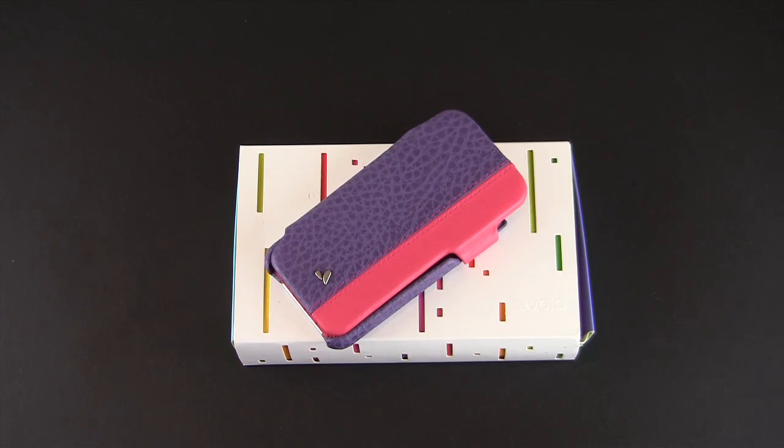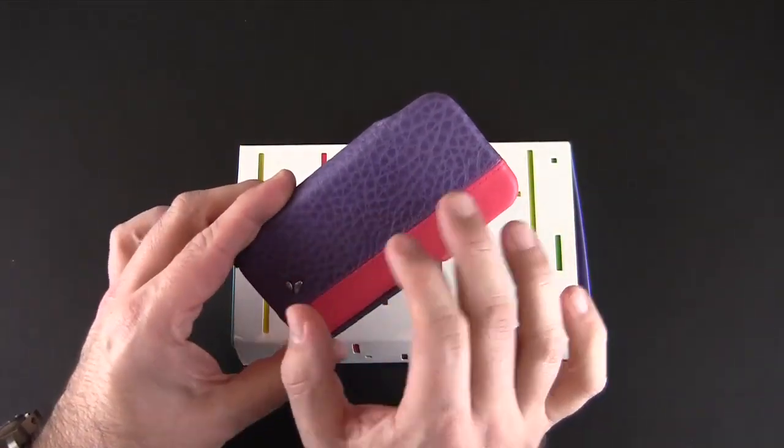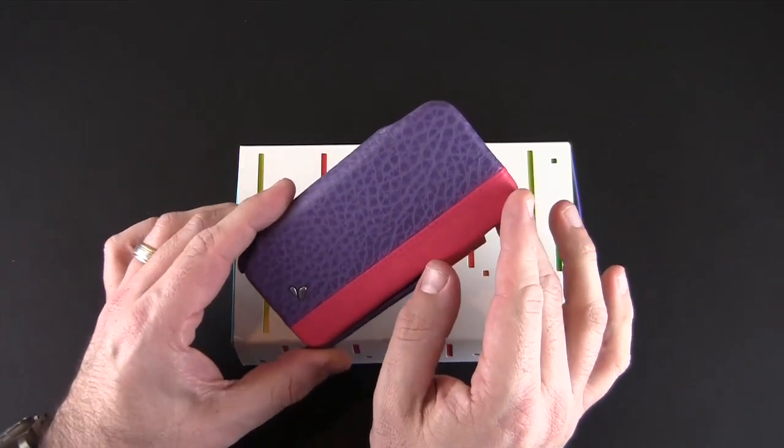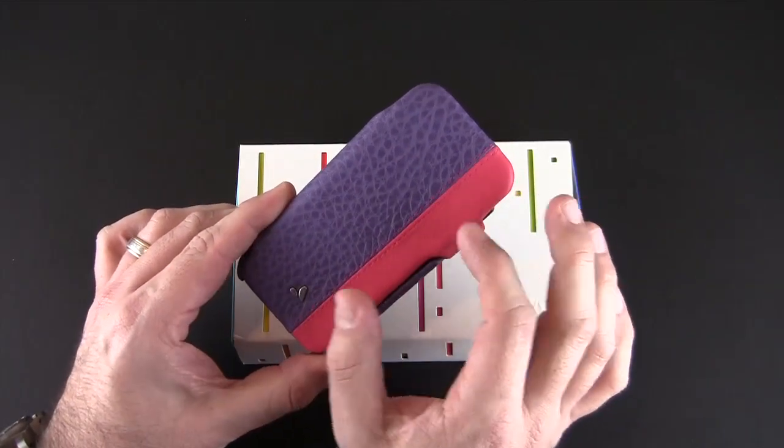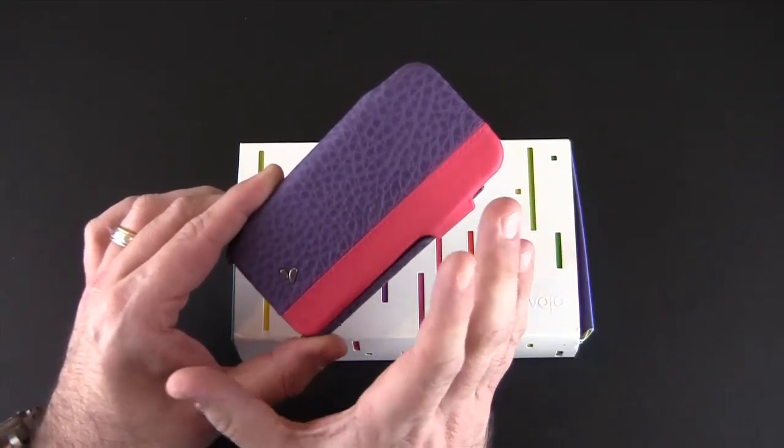Hey guys, it's Larry Greenberg and today we're taking a look at the Vaja agenda LP case for the iPhone 5. There are a select group of stock colors that Vaja makes this case in and those sell for $120, or you can design your own from a ridiculous amount of color combinations and if you go the custom route it'll cost you $140.